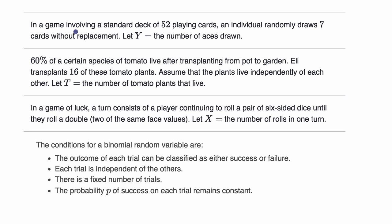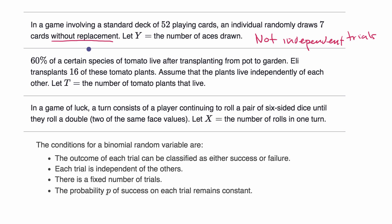Let's look at the first one. In a game involving a standard deck of 52 playing cards, an individual randomly draws seven cards without replacement. Let Y be equal to the number of aces drawn. When drawing without replacement, your probability of getting an ace on a given trial depends on whether you got aces in previous trials — because if you got an ace previously, there will be fewer aces in the deck. So the trials are not independent. If on every trial you put the card back in the deck, they would be independent, and the probability of getting an ace would be the same each trial — but not with without replacement. So this is not binomial because you don't have independent trials.